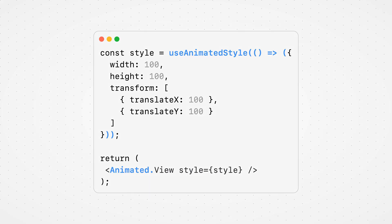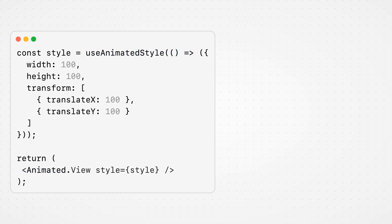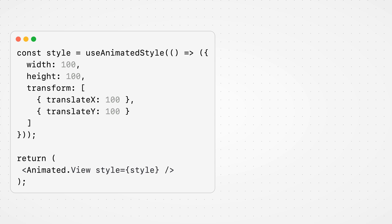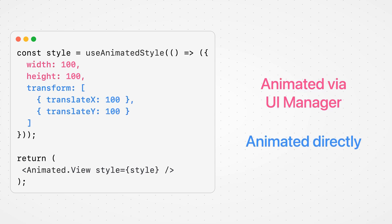If we take Animated.View for instance, a property like transform can be updated directly because it's not going to change the layout of other elements, but properties like height and width need to be updated via the UI manager because they might affect the layout of other elements. This distinction can be quite important in some use cases, as you will see.